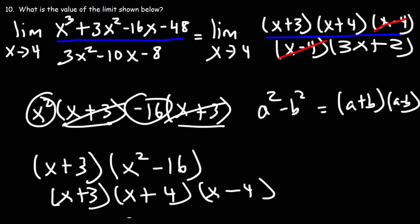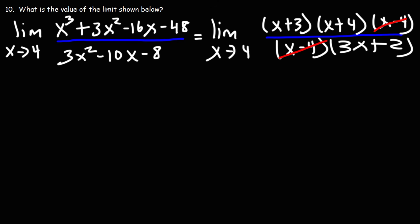So now we could cancel out the x minus 4 term. I mean the x minus 4 factor, rather. That is the factor that prevents us from using direct substitution, because 4 minus 4 is 0. Now that that particular factor has been eliminated, we can use direct substitution.